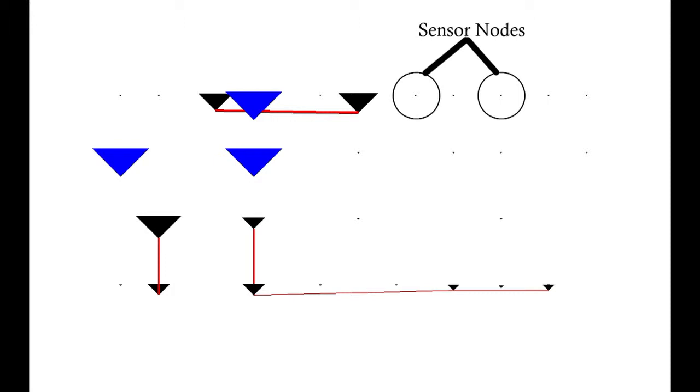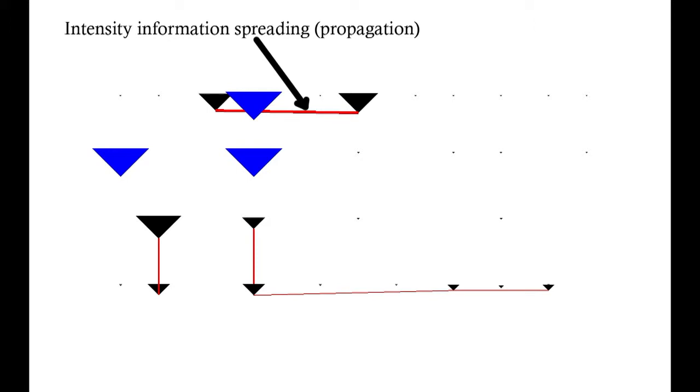Nodes that detect the target receive a maximum intensity value and are represented by big blue triangles. Since the intensity value of a node decreases over time, and intensity information propagation propagates intensity values smaller than the maximum, we decrease the size of the nodes and also change their color to black to differentiate them from detection points.